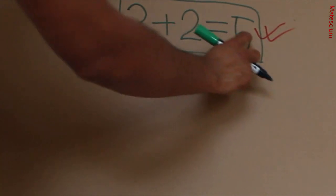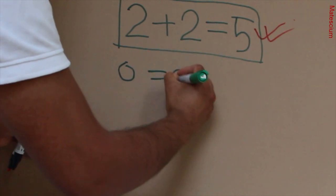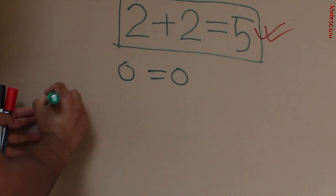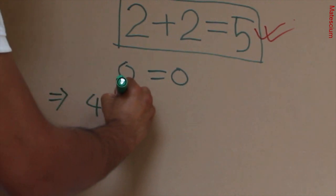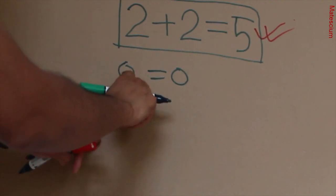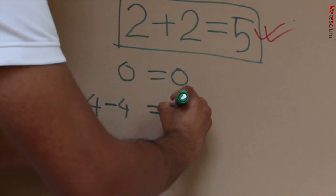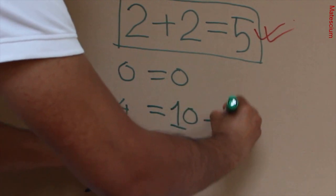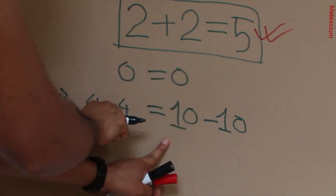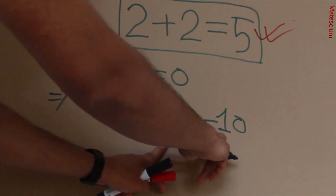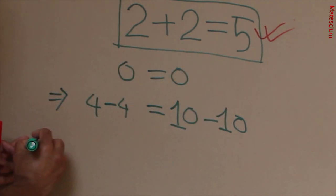Well, let's prove that 2 plus 2 is equal to 5. Let's consider 0 is equal to 0. And then this 0 can be written as 4 minus 4. Because 4 minus 4 is equal to 0. Similarly, that 0 can also be written as 10 minus 10. Look at here, 10 minus 10 is equal to 0 and 4 minus 4 is equal to 0. That means those 2 mathematical statements can go back and forth and they are supported by each other.